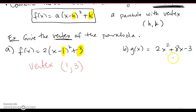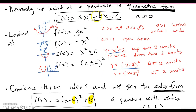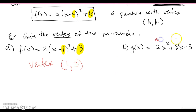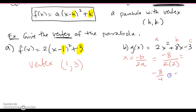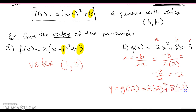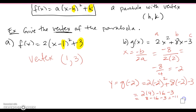For part B, we need to give the vertex, but this is not in vertex form — it's in quadratic form. So we go back to using -b/(2a). Label a, b, and c. The x-coordinate is -b/(2a) = -8/(2·2) = -8/4 = -2. For the y-coordinate, plug x = -2 back into g. Once we do the math, it spits out -11. So the vertex for part B is (-2, -11). In vertex form you pull out h and k quickly; in quadratic form you go through the -b/(2a) process.